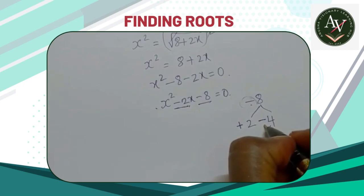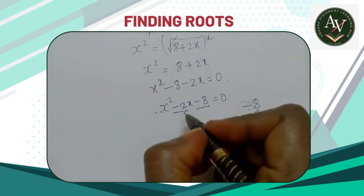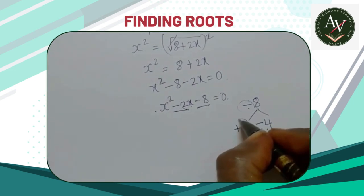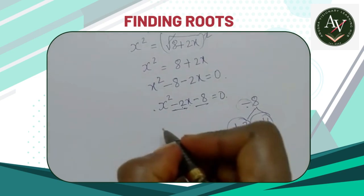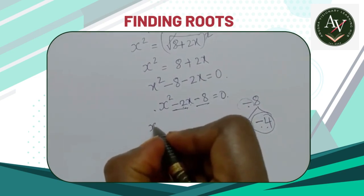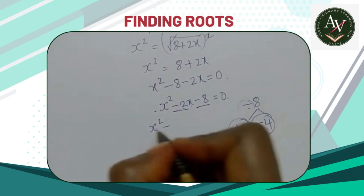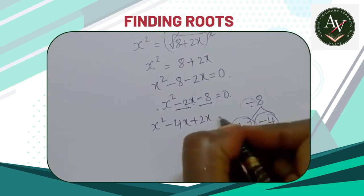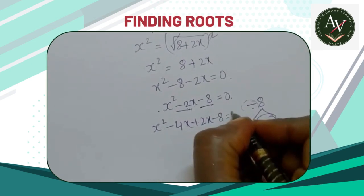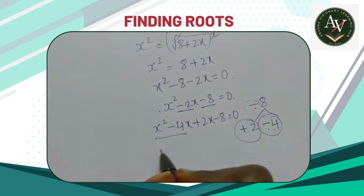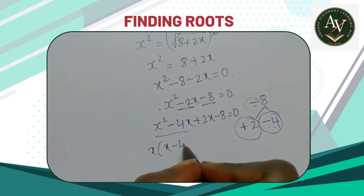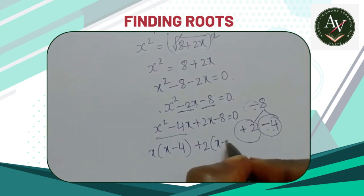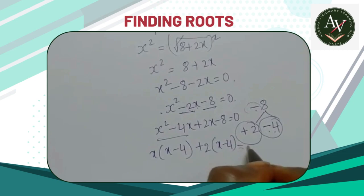Check: +2 and -4 equals -2. So the coefficient of x is -2. We can take the factors as +2 and -4. x² - 4x + 2x - 8 = 0. Take x as common: x(x - 4) + 2(x - 4) = 0.